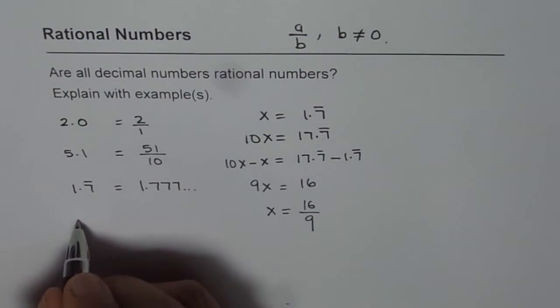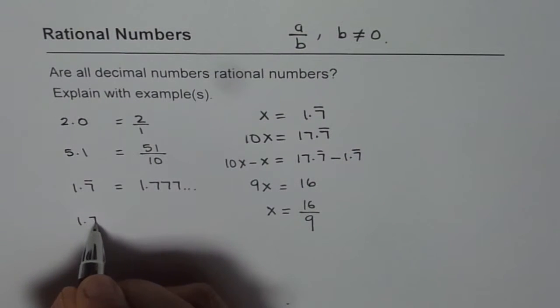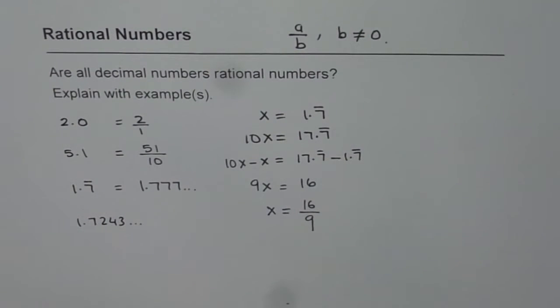How about if I have a decimal number where it does not repeat, for example, 1.7243, something like that. Now, for such a decimal number, we cannot write in the form of a quotient of two integers.